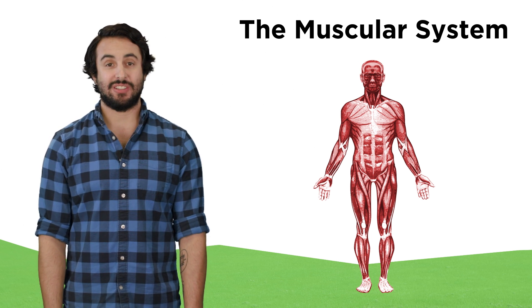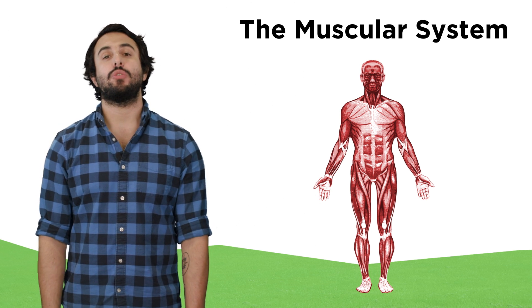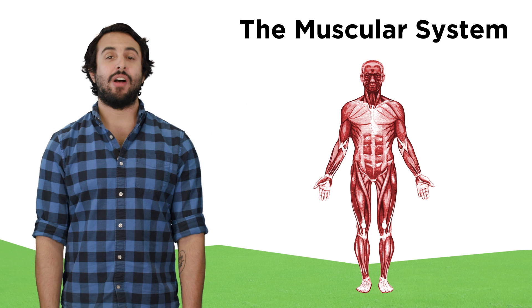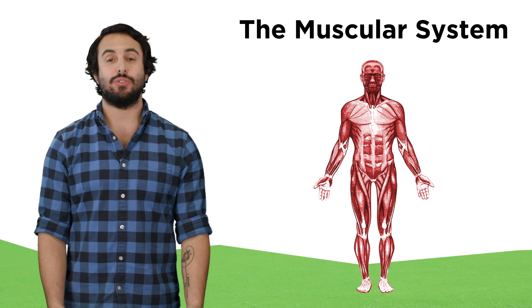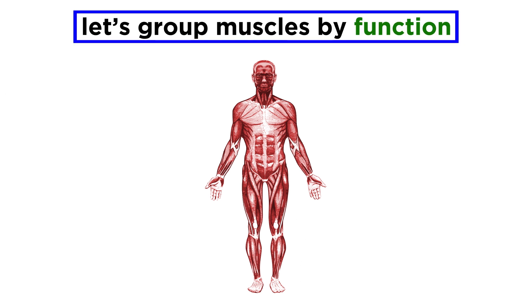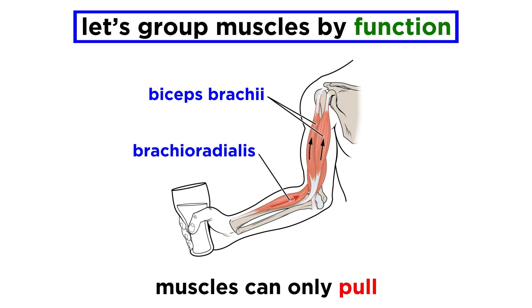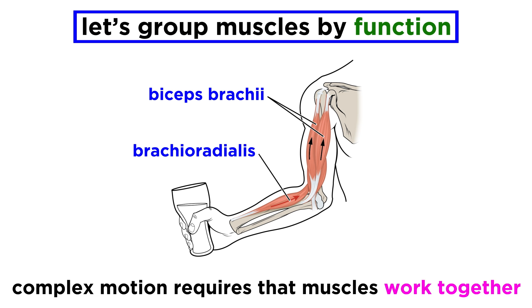There are hundreds of muscles in the body, so we won't name every single one, but we will go through some important points as well as a number of the major muscles and muscle groups. We must realize that muscles specifically contract and do not expand, which means that muscles can only pull — they do not push. So complex motion requires many muscles working together in interesting ways.